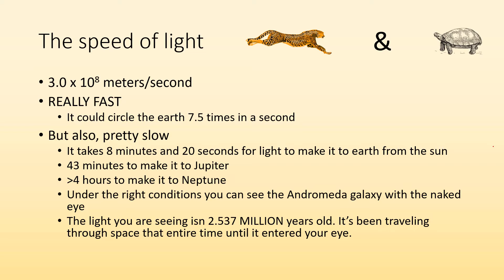And it takes more than four hours for light from the sun to make it to Neptune. Under the right conditions in the night sky, you can see the Andromeda galaxy with the naked eye. And that light has been traveling for over two and a half million years. The light you're seeing is two and a half million years old. It's been traveling through space unobstructed until it entered your eye and you absorbed it.